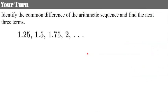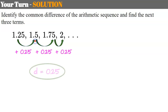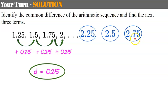Now it's your turn. Pause the video, identify the common difference of this arithmetic sequence, and find the next three terms. Welcome back. Our common difference here is 0.25, or 25 hundredths — we add it repeatedly to get the next term. To identify the next three terms: 2 plus 0.25 is 2.25, add 0.25 and you get 2.5, add another 0.25 and you get 2.75.